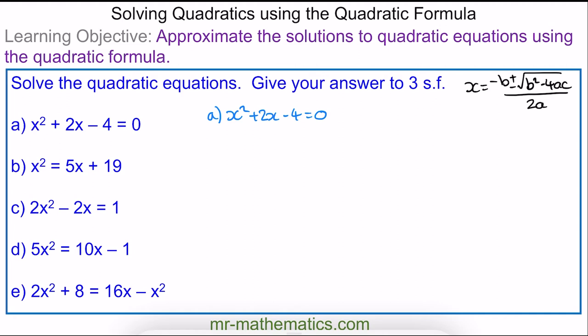To solve equation a, we need to identify the values of a, b, and c. Here, a is the coefficient of x² which is 1, b is the coefficient of x which is 2, and c is our constant term which is negative 4.